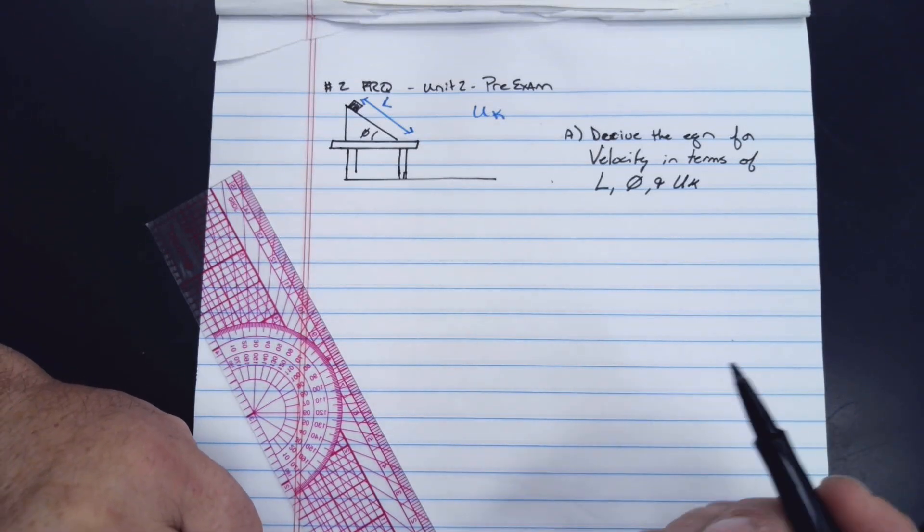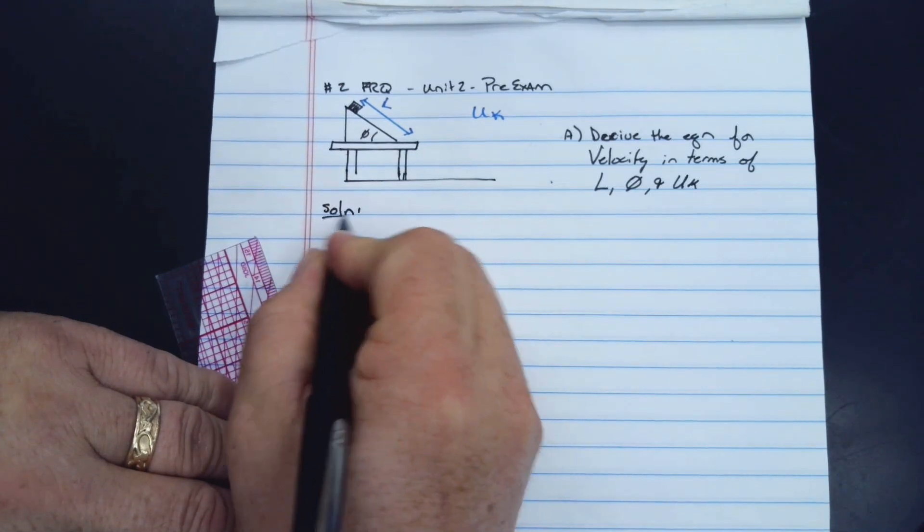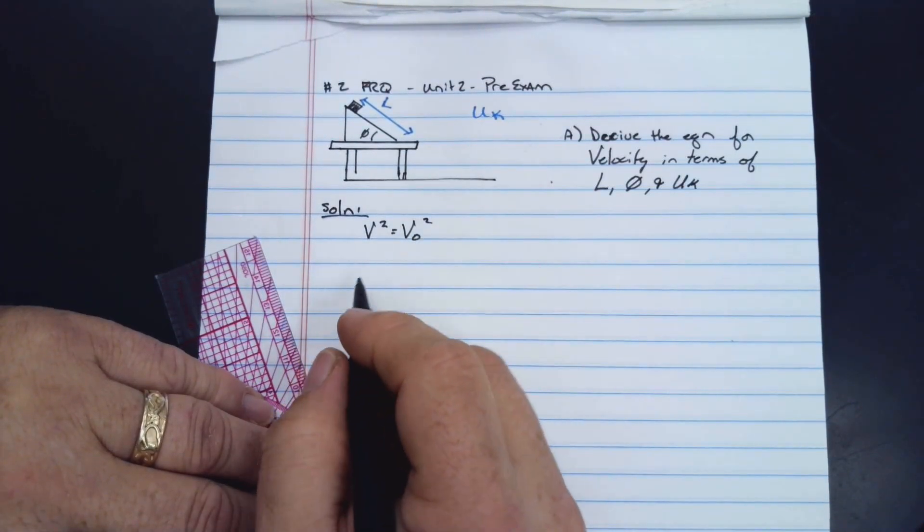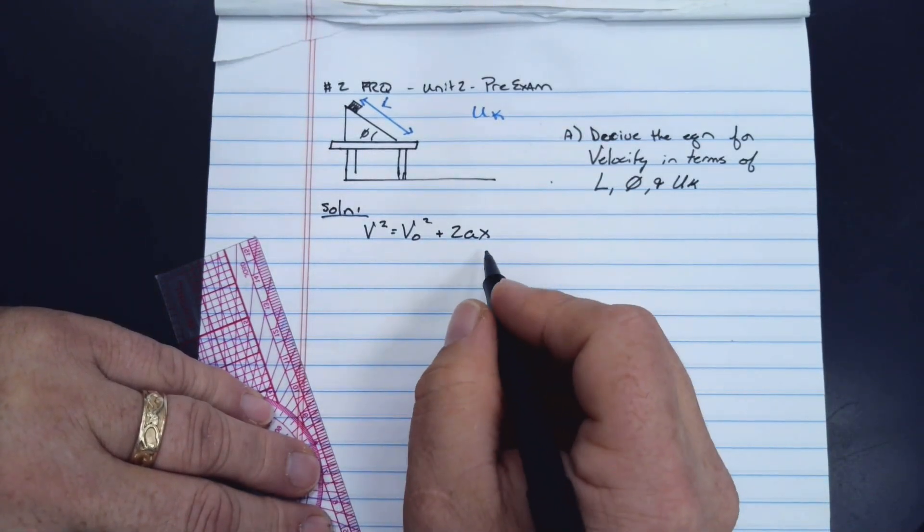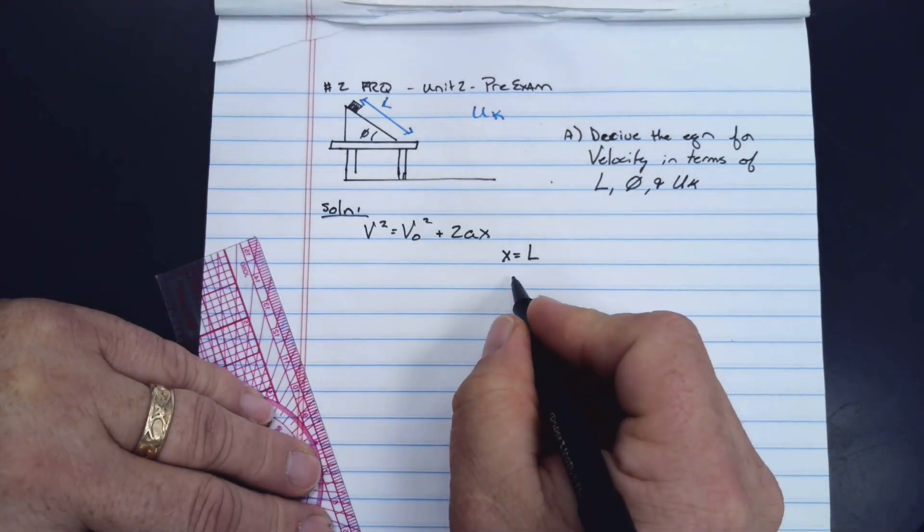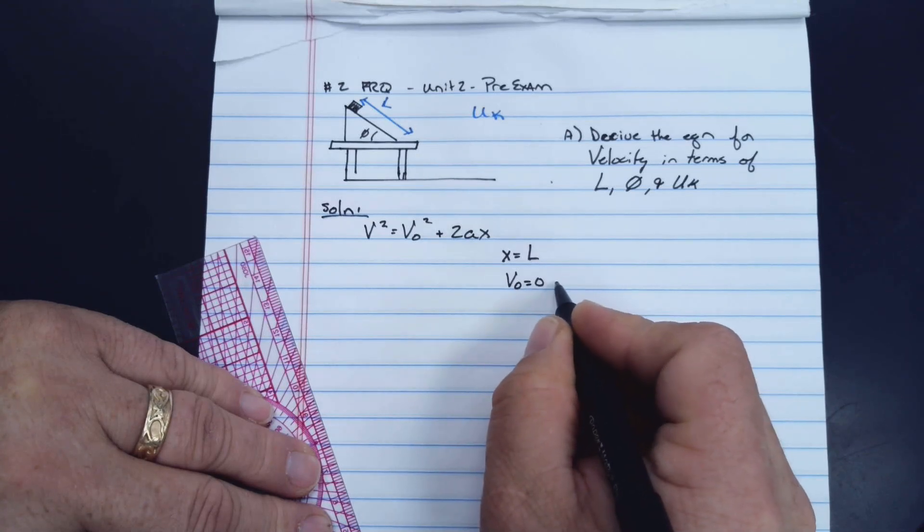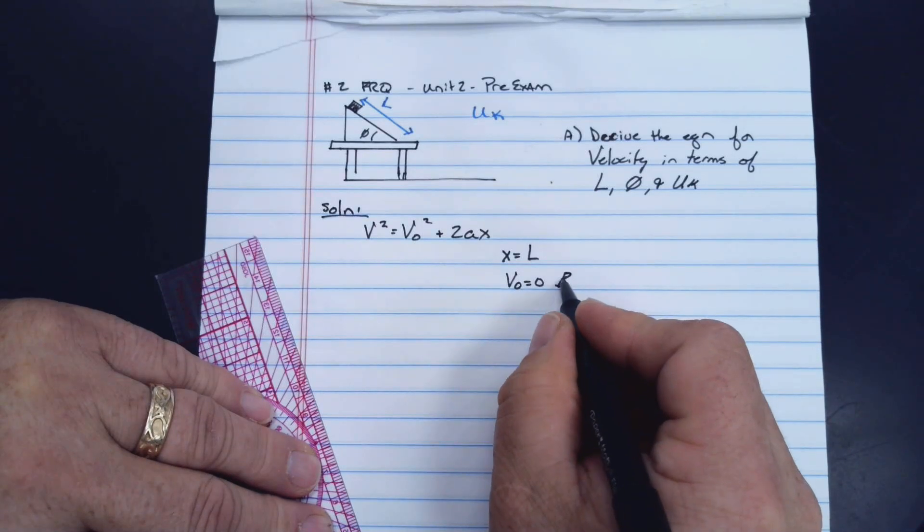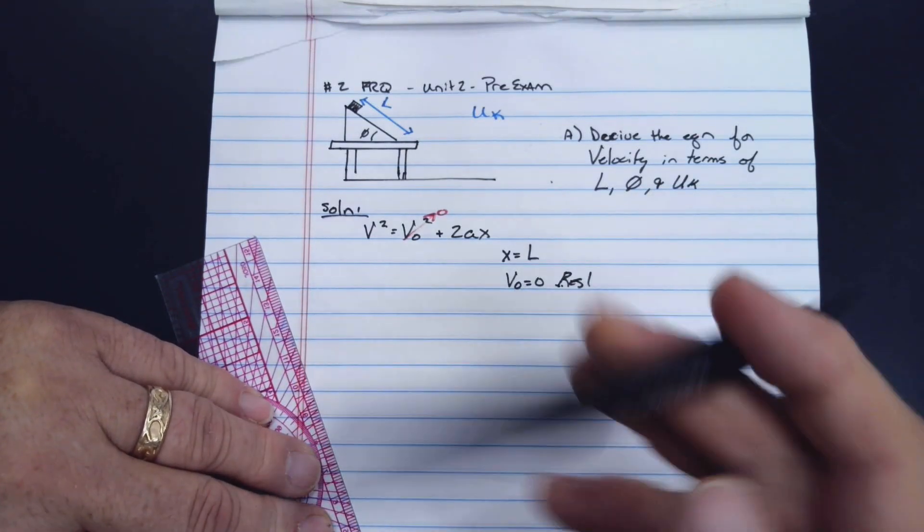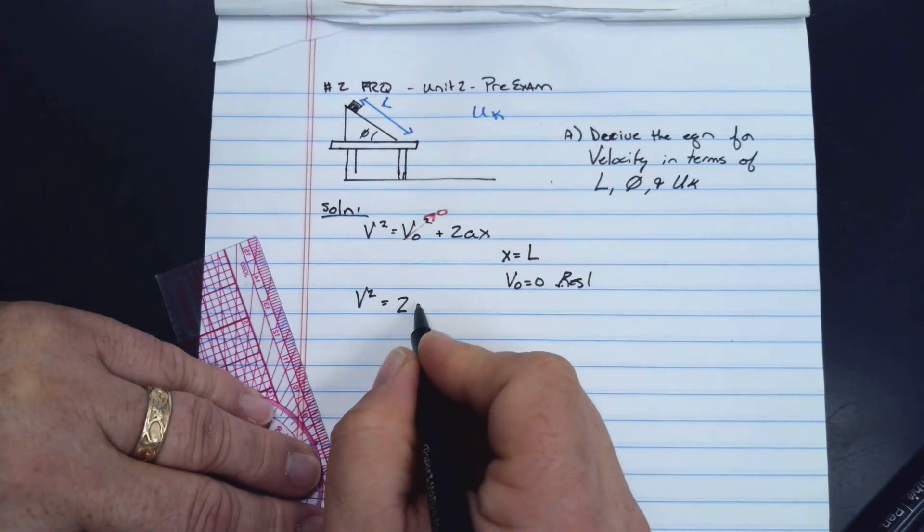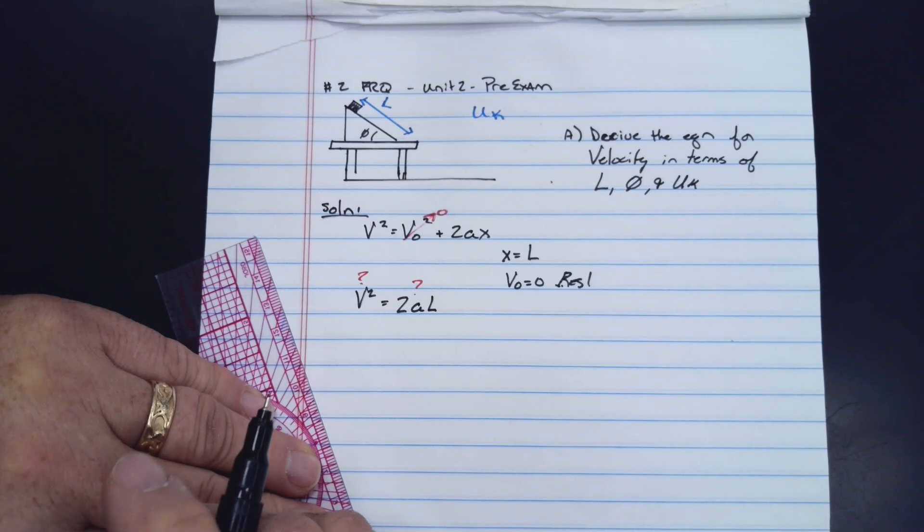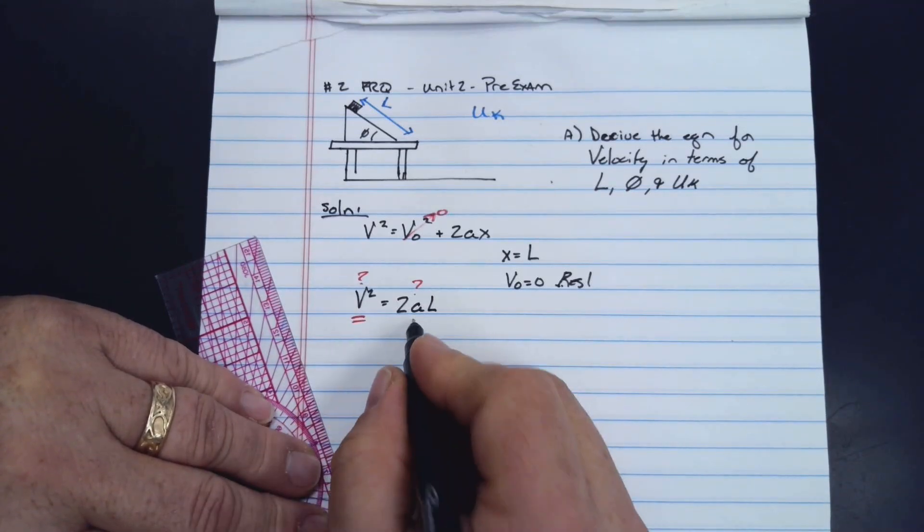What they want to know first is derive the equation for the velocity in terms of L, the angle, and μk. Let's look at what that velocity would come from. We would use v² = v₀² + 2ax. The x distance is really L, so we substitute that in. It starts from rest, so we can get rid of v₀.